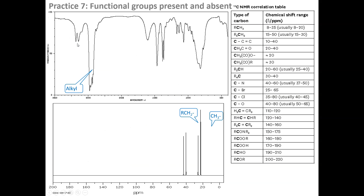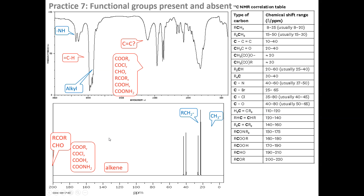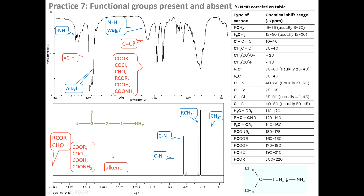Seventh example: we can see it's got a primary NH₂ and it must be an amine because there's no carbonyl peak and certainly no alkene. The NMR confirms there's nothing in the alkene or carbonyl regions. So those NMR peaks must be related to the carbon bonded to the nitrogen. The second nearby peak has simply been deshielded by that electronegative nitrogen — remember, electronegative elements can influence shifts over three carbons.